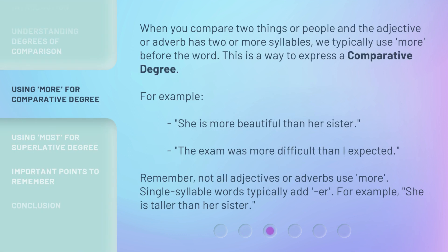When you compare two things or people and the adjective or adverb has two or more syllables, we typically use more before the word. This is a way to express a comparative degree. For example, 'she is more beautiful than her sister' and 'the exam was more difficult than I expected.' Remember, not all adjectives or adverbs use more — single-syllable words typically add -er. For example, 'she is taller than her sister.'